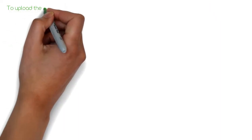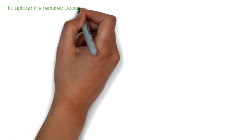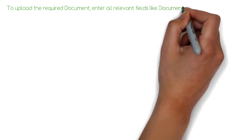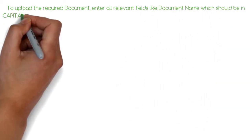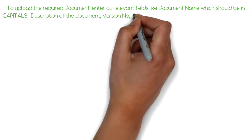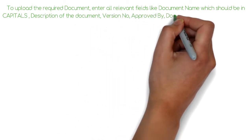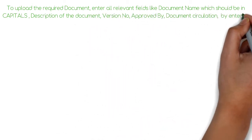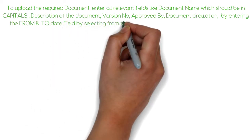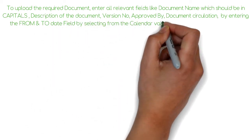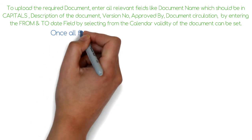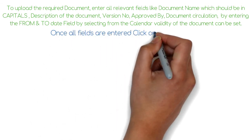To upload the required document, enter all relevant fields like Document Name, which should be in capitals, Description of the document, Version Number, Approved By, and Document Circulation by entering the From and To Date fields. By selecting from the calendar, the validity of the document can be set. Once all fields are entered, click on the Save button.